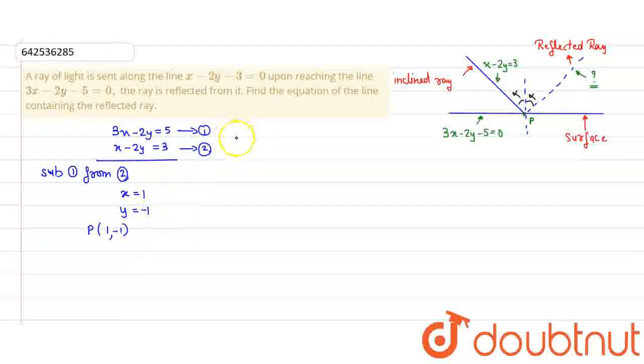Now, as we know, when incident ray and reflected ray, they are inclined to the normal at the same angle. So, they make the same angle.